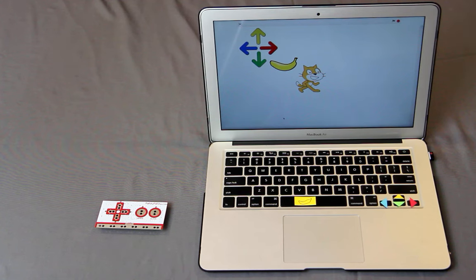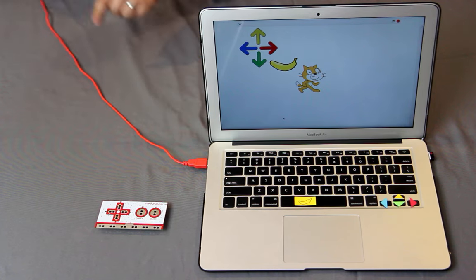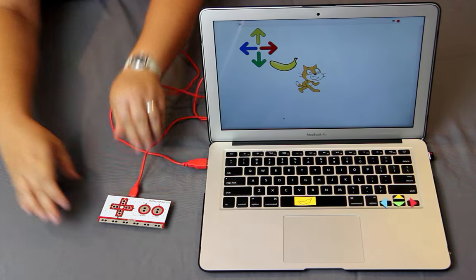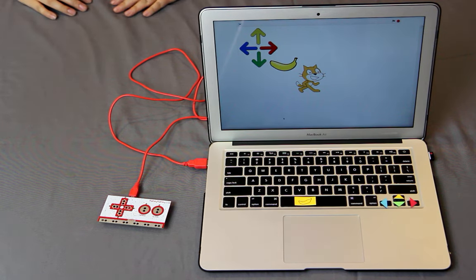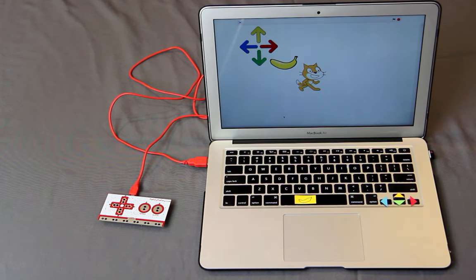Right now, nothing is connected, so first, we need to turn the Makey Makey on by plugging it into a computer using the USB cable. When you plug it in, the lights will flash for a second, and the power indicator light should turn on to indicate that the board is properly connected. If any pop-ups or alerts open on your computer, just close them out. You don't need to run any software or install anything to get the Makey Makey to work.